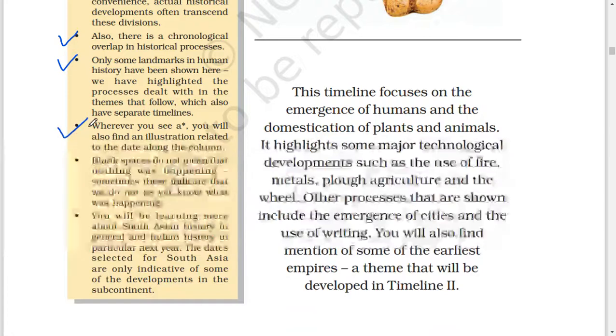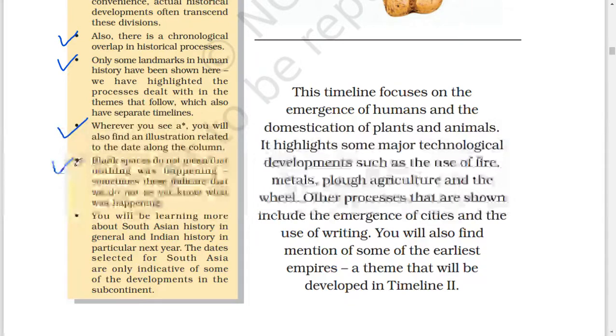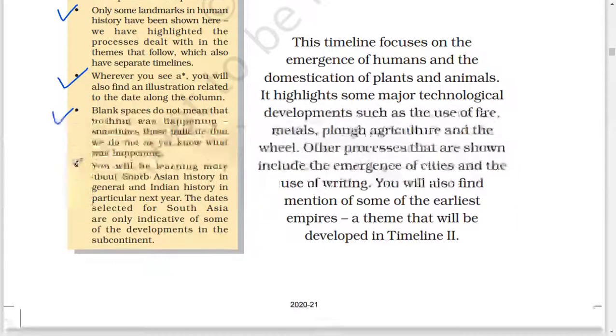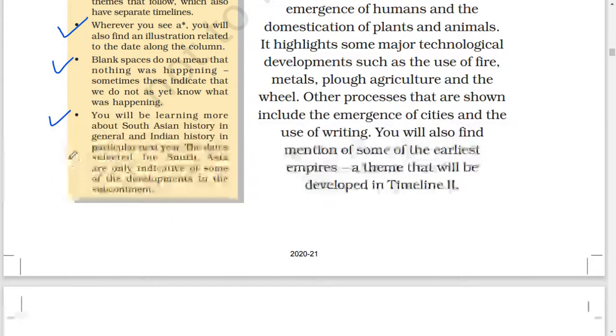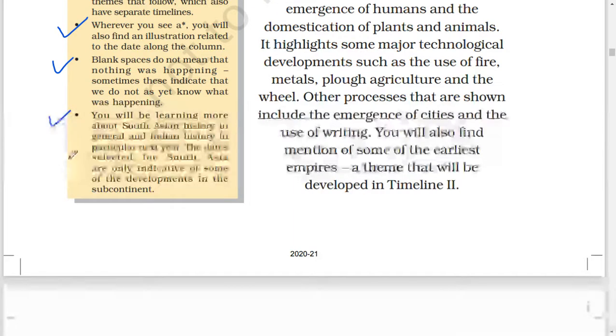Wherever you see an asterisk, you will also find an illustration related to the date along the column. Blank spaces do not mean that nothing was happening. Sometimes this indicates that we do not yet know what was happening. You will be learning more about South Asian history and general and Indian history in particular next year. The dates selected for South Asia are only indicative of some of the developments in the subcontinent.